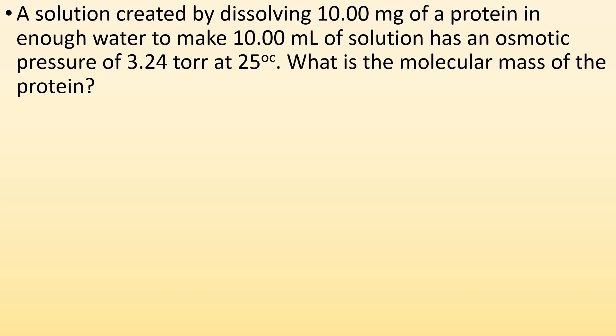So, example problem. Solution is created by dissolving 10 milligrams of a protein in enough water to make 10 milliliters of solution has an osmotic pressure of 3.24 torr at 25 Celsius. What is the molecular mass of the protein? So, it being a protein is telling us that its van 't Hoff factor is one. It's a non-electrolyte. So, I go back. I got my gram formula mass equals IRT G over pi times liters.